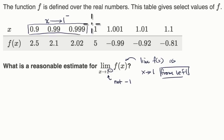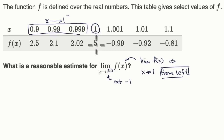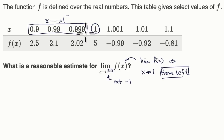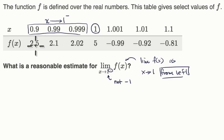In fact, we shouldn't even let the value of f of x at x equal one confuse us. Sometimes — and oftentimes — the limit is approaching a different value than the actual value of the function at that point. So let's look at this: at 0.9, f of x is 2.5.